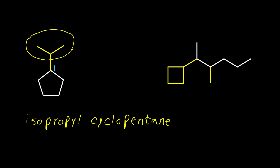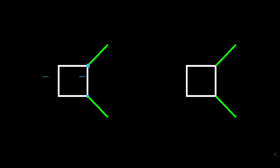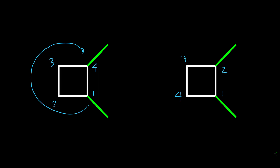Let's see how we can name a cycloalkane when we have two or more substituents. Here is the first example with two alkyl groups. We need to number the ring — again, number one is one of these points of attachment. Because these two groups are the same and the molecule is symmetric, it doesn't matter which one I choose. I can go clockwise or counterclockwise. Like the naming of alkanes, we always want to have the lowest possible number. If I choose the left one, the numbers are 1 and 4; if I choose the right one, the numbers are 1 and 2.